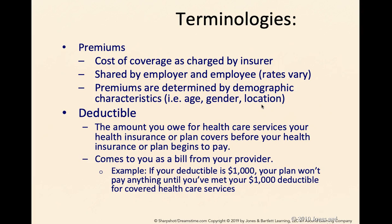A deductible is the amount you will owe your health insurance company for health services you receive before your insurance company starts paying. Deductibles come to you as a bill from your provider per service received. If your deductible is $1,000, your plan won't pay anything until you've met that $1,000 deductible for covered health care services — usually within a year. Some deductibles are $500, but with a high deductible health plan they could be as high as $2,000, or even $5,000.